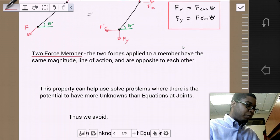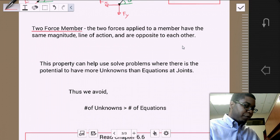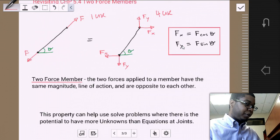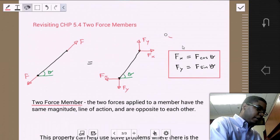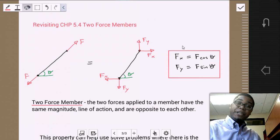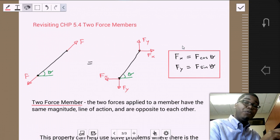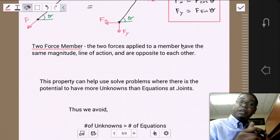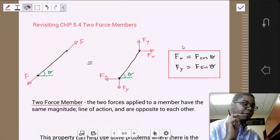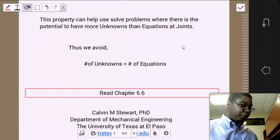And this property can help us solve problems where there is the potential to have more unknowns than equations at our joints. And thus we avoid the problem of having more unknowns than the number of equations. And so it's very important for you to revisit chapter 5.4's video. Please revisit that section. It goes over the exact details of how to determine if it is a two force member or if it isn't. So make sure that you review this video. And all you have to do is start the video and then skip directly. At the beginning of the video, in the first 30 seconds, it'll have a button for you to click where you can skip directly to 5.4.